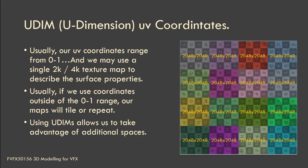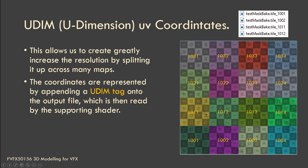Getting more detail across our textures is very useful when working with large-scale terrains. The UDIM coordinates are represented by a UDIM tag that is added onto the output filename and then read back in by the supporting shader. You can see some test bakes where the UDIM attribute is appended to the end of the filename, and any shader that supports UDIMs will read this and know where to place the UV coordinates on the UDIM grid.